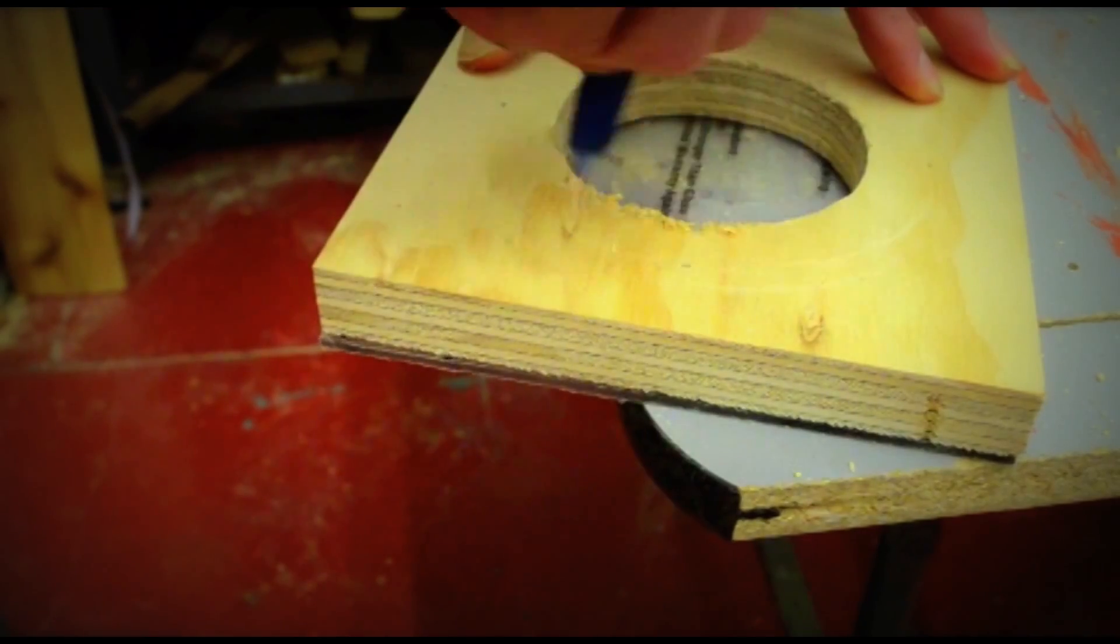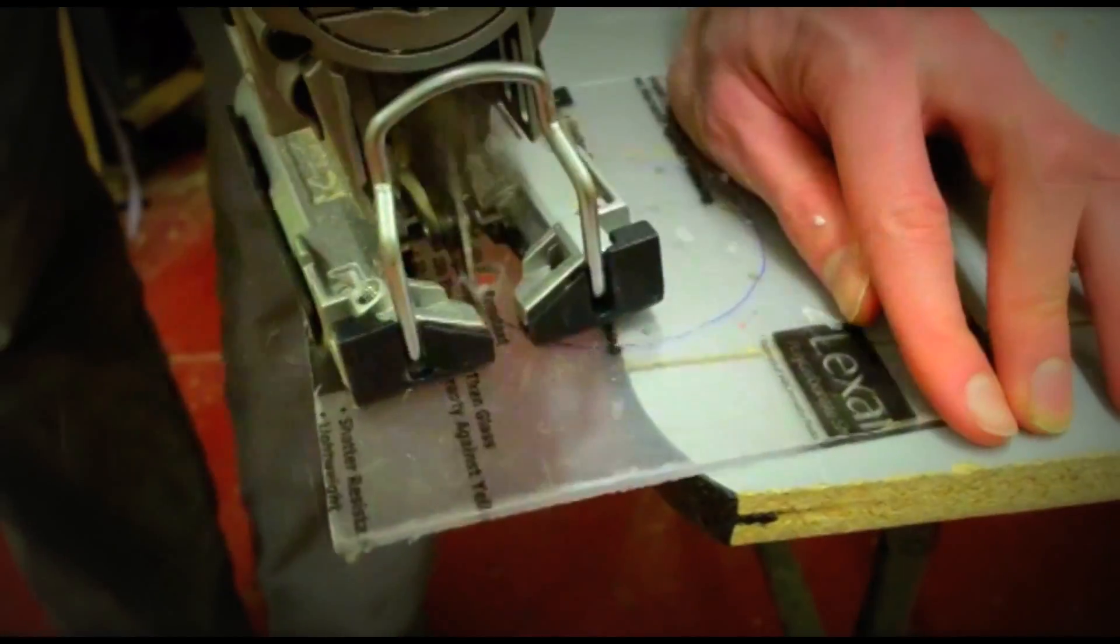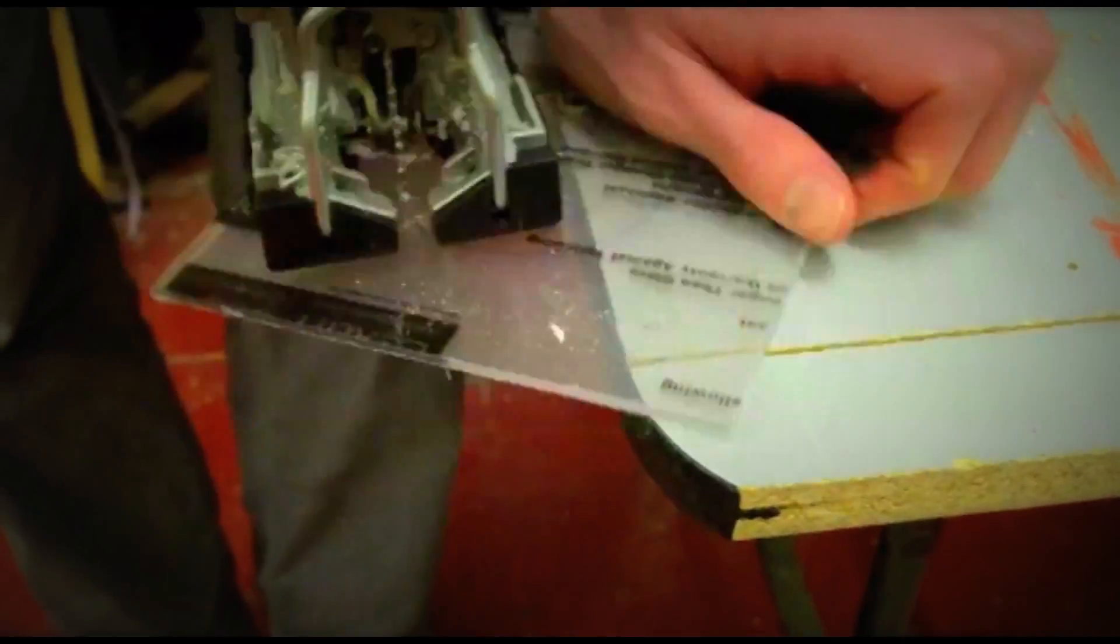Take the top piece of polycarbonate, trace a hole the same size as the one you just cut in the plywood and cut it out using the same method.